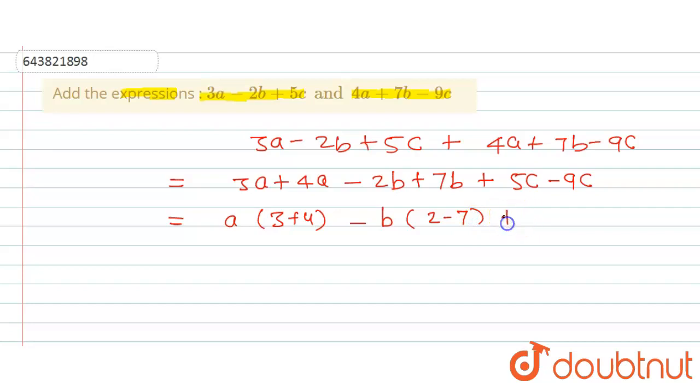Now here, a times 3 plus 4 is going to be equal to 7, so 7a. And here, minus 2 minus 7 - 2 minus 7